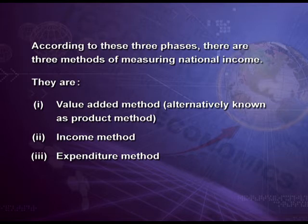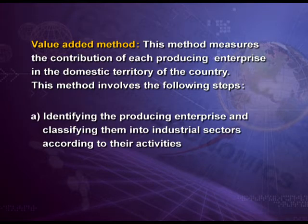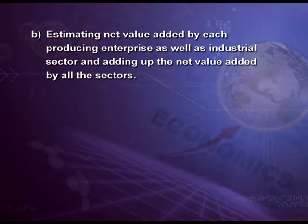Let us discuss first the value added method. This method measures the contribution of each producing enterprise in the domestic territory of the country. This method involves the following steps: firstly, identifying the producing enterprises and classifying them into industrial sectors according to their activities — that is, identification and classification. Secondly, estimating net value added by each producing enterprise as well as industrial sector, and adding up the net value added by all these sectors — that is, estimation.